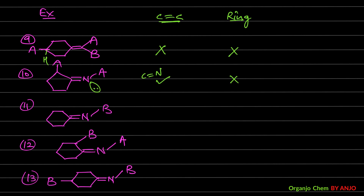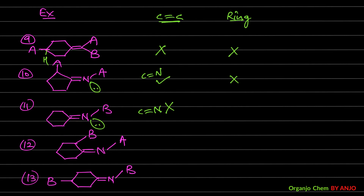Example 11: The C=N system again has nitrogen with a lone pair and group B — two different groups. But the SP2 carbon has two identical parts, so GI from C=N is not possible. The cyclic part also has no SP3 carbon that is disubstituted with two different groups. So this molecule cannot show GI from either C=N or the ring.